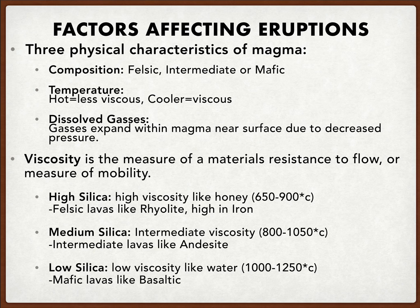And then lastly, low silica material will have low viscosity — those would be between temperatures of 1,000 to 1,250 degrees Celsius. Those would be more mafic in material, such as basalt. So when looking at viscosity, we can see that there's definitely a correlation with what is viscous or not, based on its silica content and its temperature range.